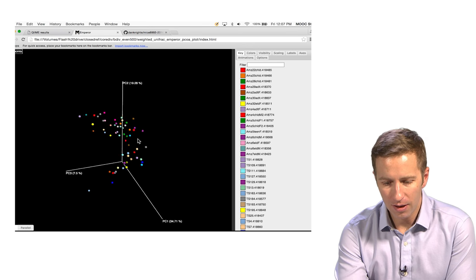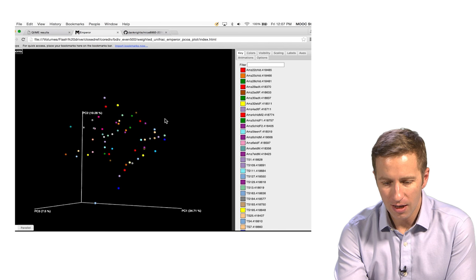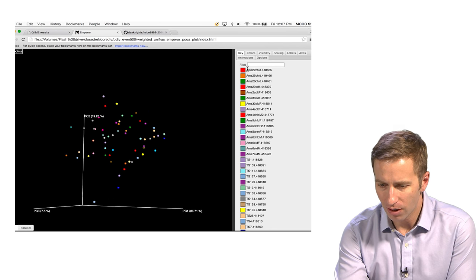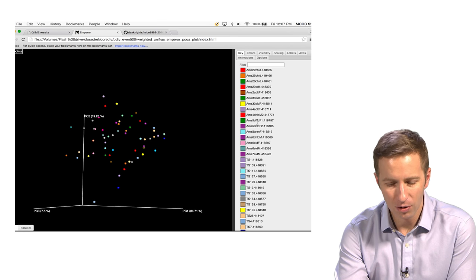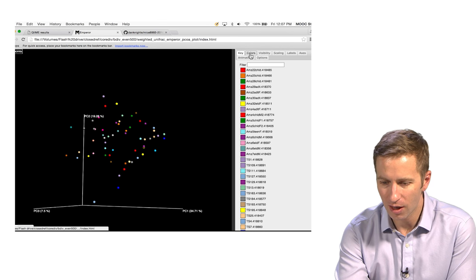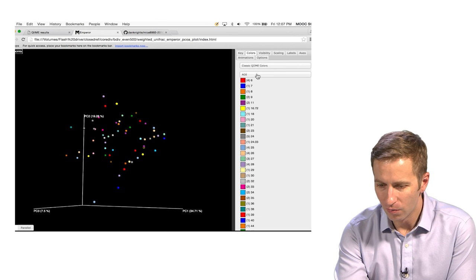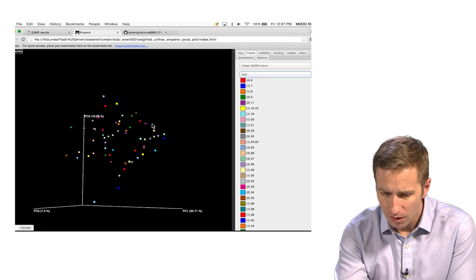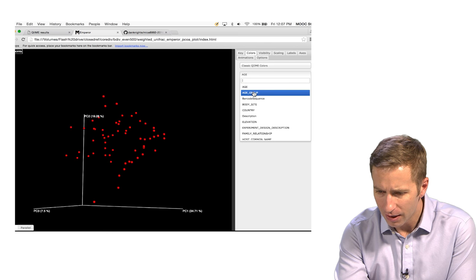But it's basically trying to show you as best as possible all of the distances between the samples. Here we can rotate this around and see which samples are similar to one another. Right now it looks like they're colored by the sample ID, which isn't very informative. So if we go over to colors, we can color them by age group,